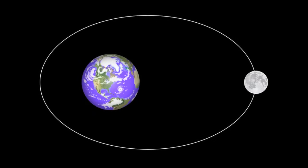The moon orbits the Earth along an elliptical path. The moon is actually farther away from the Earth than it will be at other points in its orbit, and we have a name for this time. This is called apogee — apogee is when the moon is at its farthest point from the Earth.